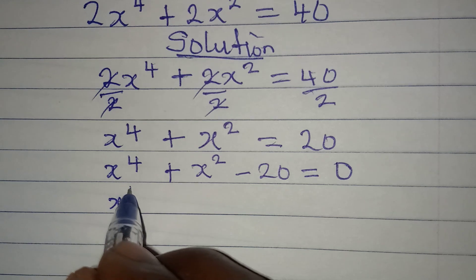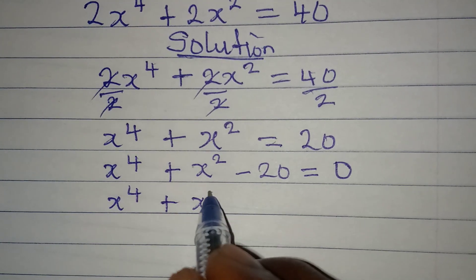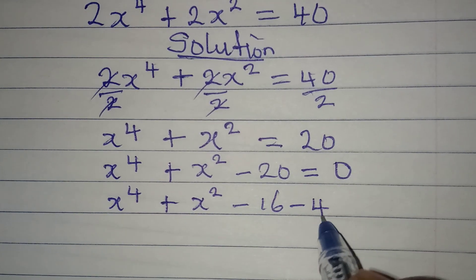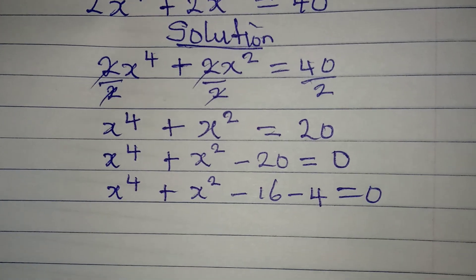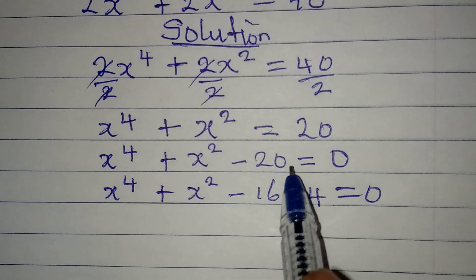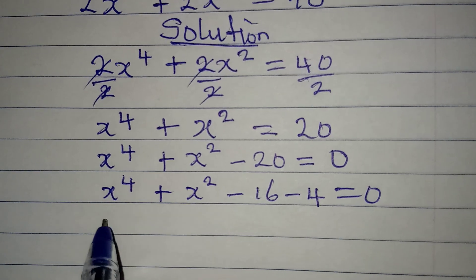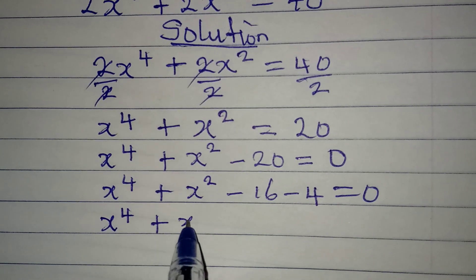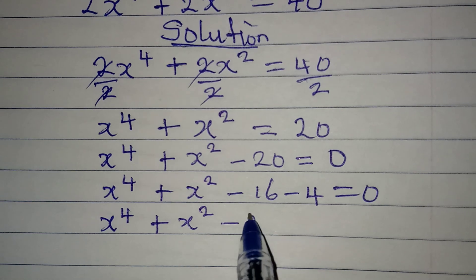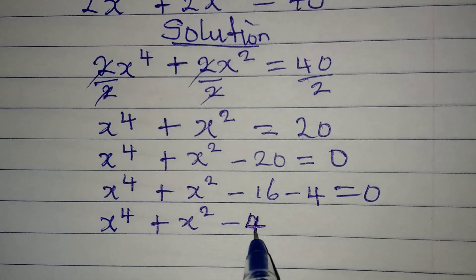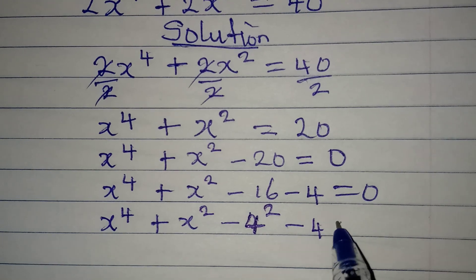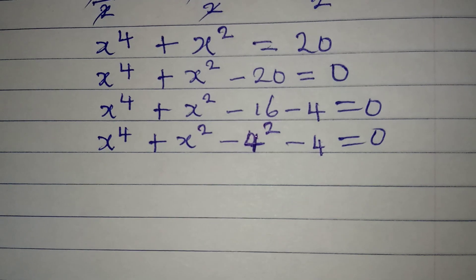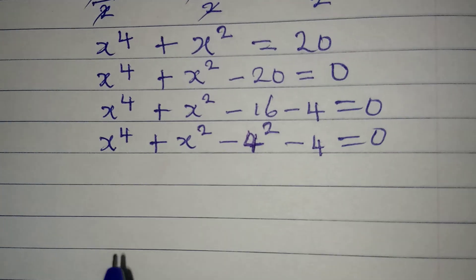This is the same thing as x to the power of 4 plus x to the power of 2 minus 16 minus 4 equals 0, because minus 16 minus 4 gives us negative 20. We can also express this as x⁴ plus x² minus 4 squared minus 4 equals 0, since 4 squared gives us 16.